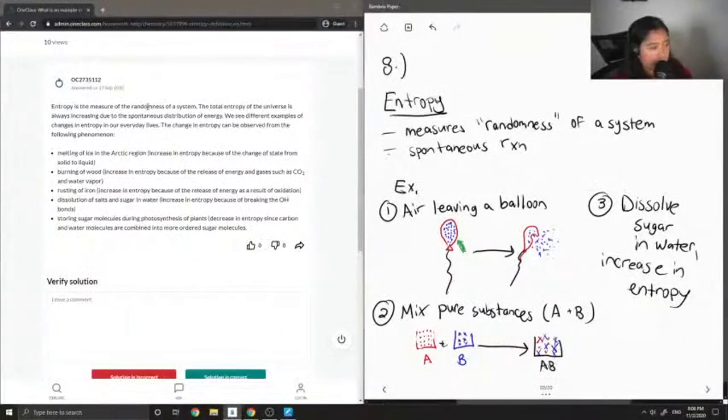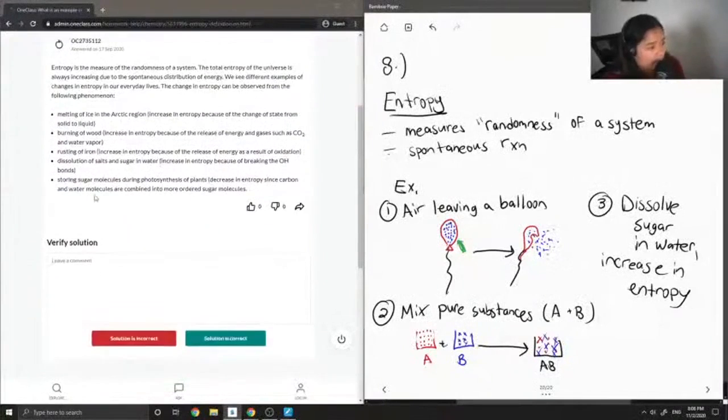Dissolution of salts and sugar in water - this is an increase in entropy because of breaking the OH bonds. Finally, storing sugar molecules during photosynthesis of plants is an example of a decrease in entropy since carbon and water molecules are combined into more ordered sugar molecules.